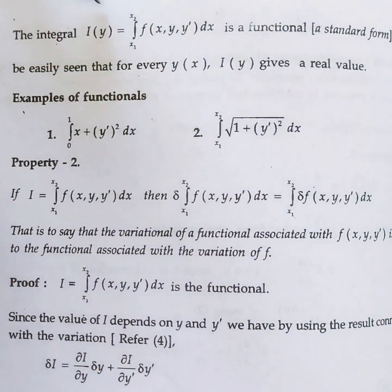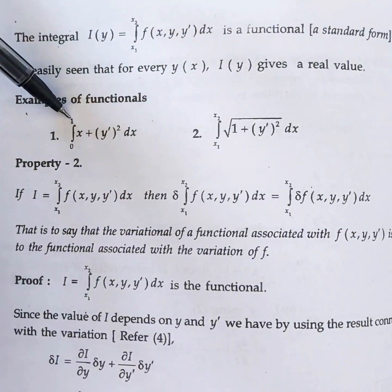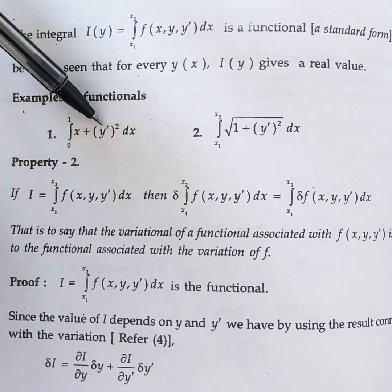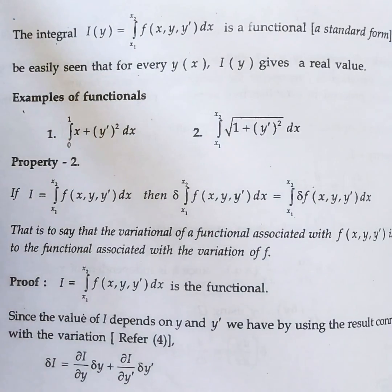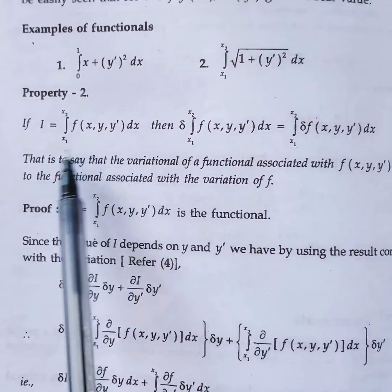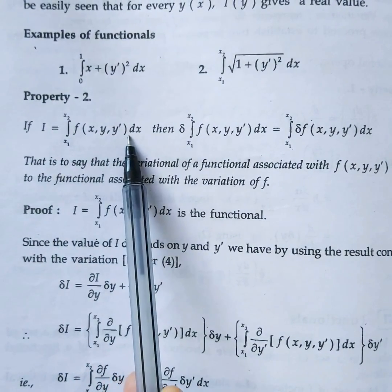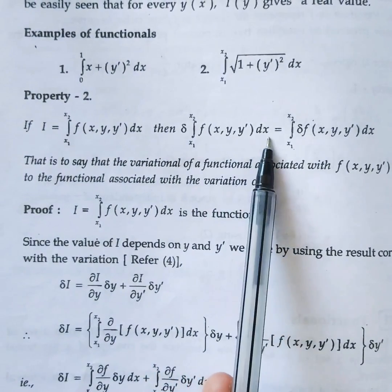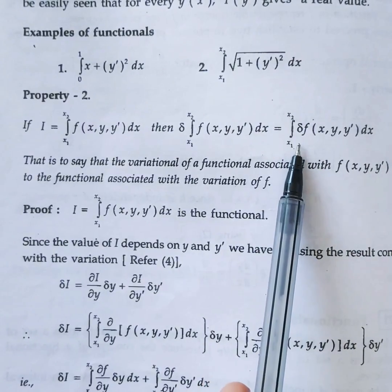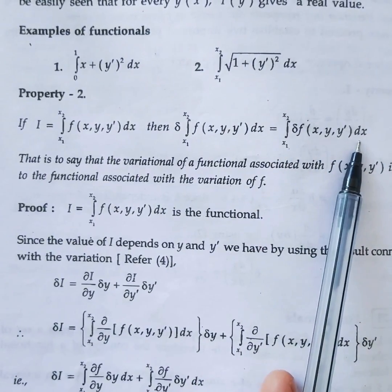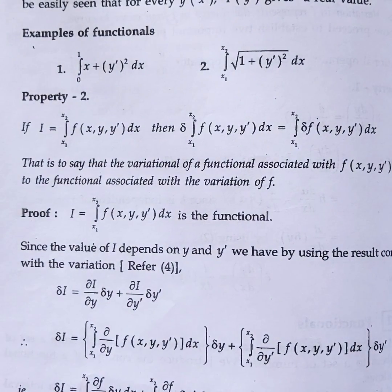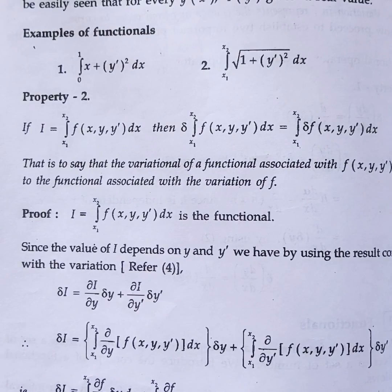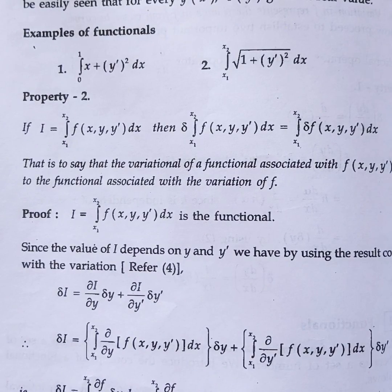In general, I of y is equal to integral x1 to x2 of f of x, y, y dash dx. This is a functional. An example is the integral from 0 to 1 of (x plus y dash) squared dx. A key property: if I equals that integral, then delta of the integral equals the integral of delta f. So delta and d/dx, or delta and the integral, are commutative with each other.